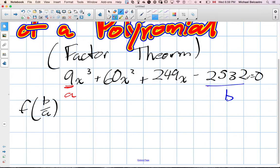Now, this one here, I can actually common factor the value 3 out of everything. So when I common factor 3 out, you get 3(3x³ plus 20x² plus 83x minus 844). Beautiful.